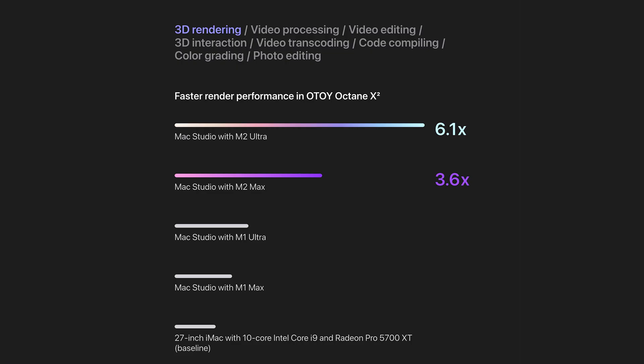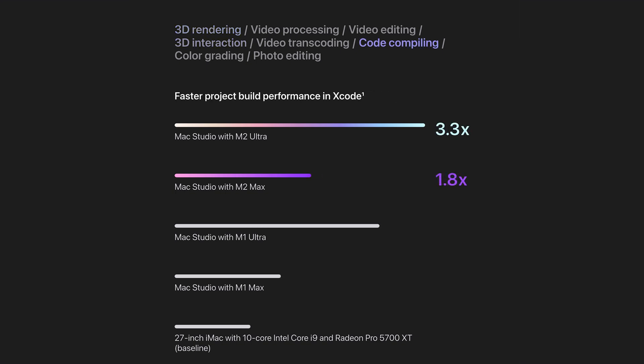Apple's own benchmarks for tasks such as 3D rendering, interaction, and code compiling show significant gains over even the previous M1 Ultra. Still, I prefer real-world examples, so today we're looking at M2 Ultra performance in a few common video applications, because it's easy to predictably render out actual edited projects that give a real sense of what the M2 Ultra can do.